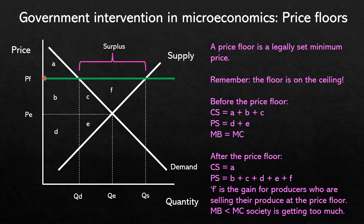As you can see in this diagram, the minimum price is set above the equilibrium price. Therefore at the price floor we have a surplus, because quantity supplied is here and quantity demanded is there. The price intersects the demand curve here but the supply curve here, creating a surplus. In a free market without this government intervention, the forces of demand and supply would push the price back down to the equilibrium.